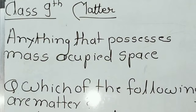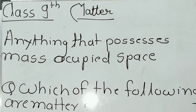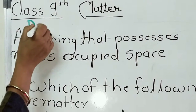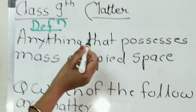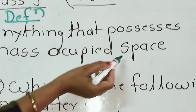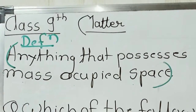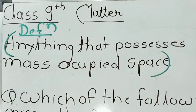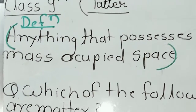The topic is matter. First of all, we understand what is the exact meaning of matter. The definition of matter is: anything that possesses mass and occupies space. This is the definition of matter. Now we understand the exact meaning of matter in detail.